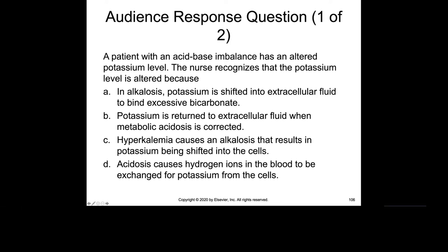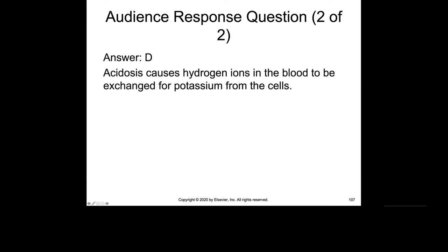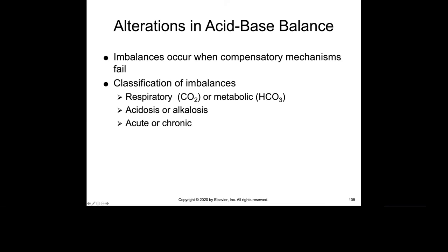There's a question here — click pause and read it. The answer is D. Acidosis causes hydrogen ions in the blood to be exchanged for potassium from the cells.